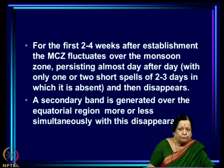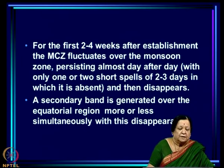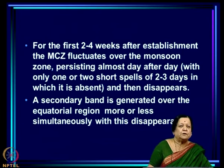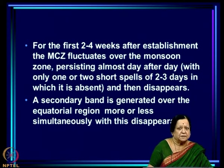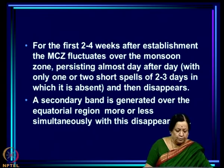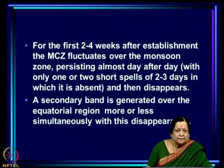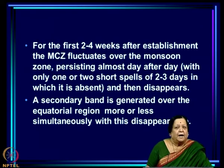For the first 2 to 4 weeks after establishment, the MCZ fluctuates over the monsoon zone, persisting almost day after day with only 1 or 2 short spells of 2 to 3 days in which it is absent, and then it disappears.